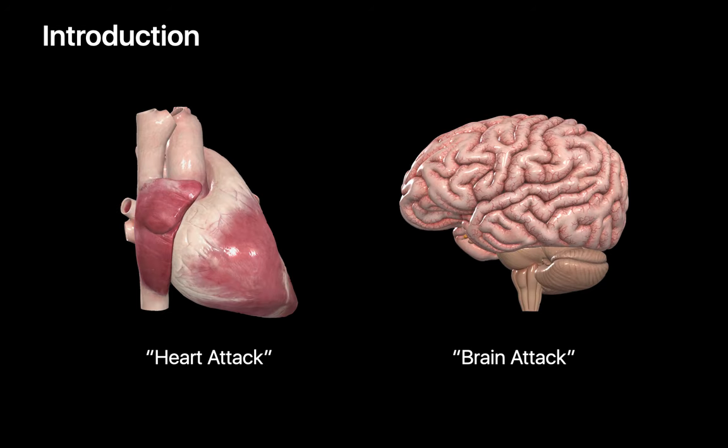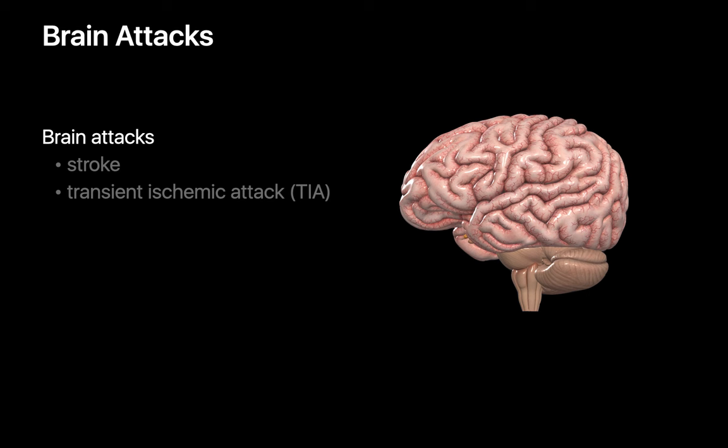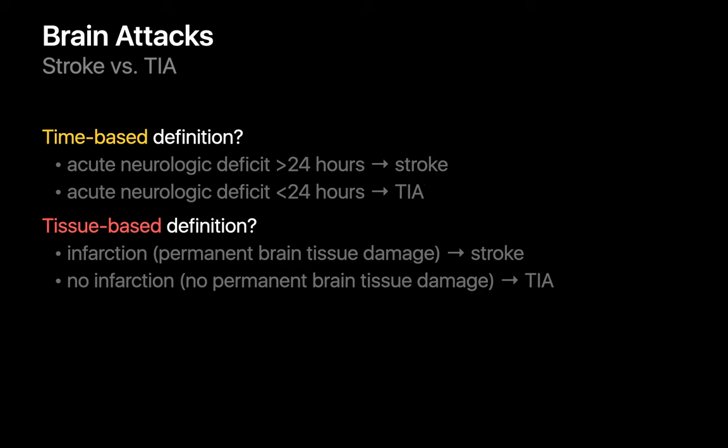Brain attacks are the brain's equivalent of heart attacks and can be divided into two buckets: strokes and transient ischemic attacks, or TIAs. There are two ways a stroke is usually distinguished from a TIA. A stroke may be defined as either a brain attack with acute neurologic deficits lasting over 24 hours, or a brain attack with irreversible brain tissue damage.